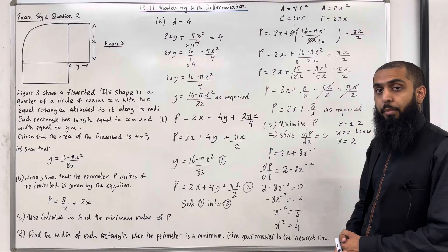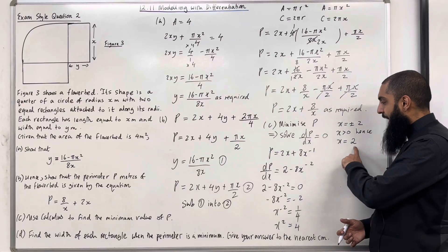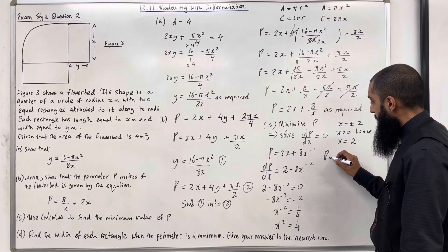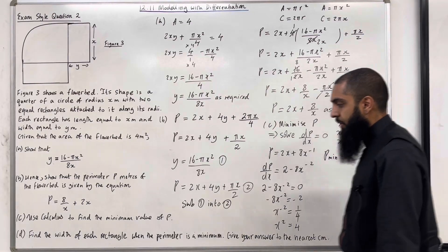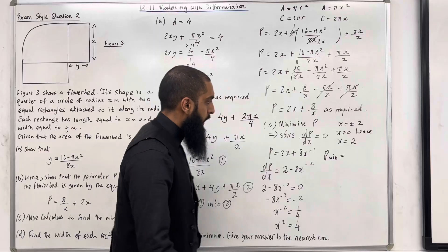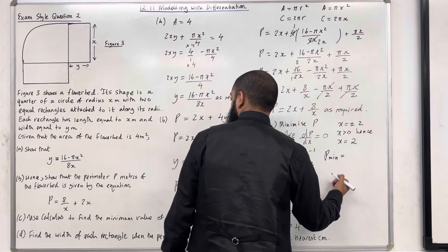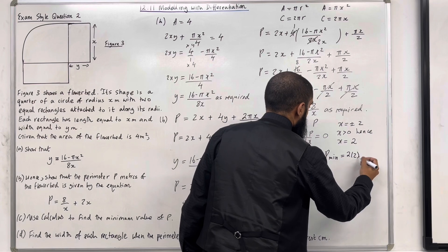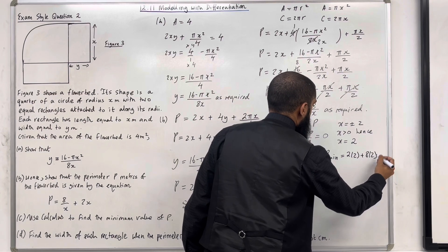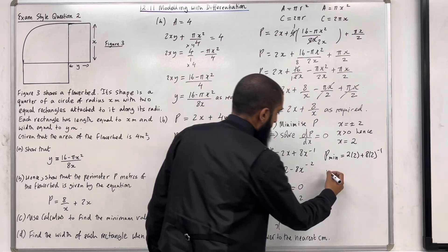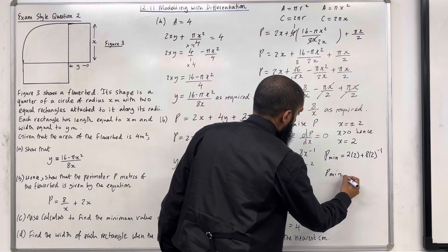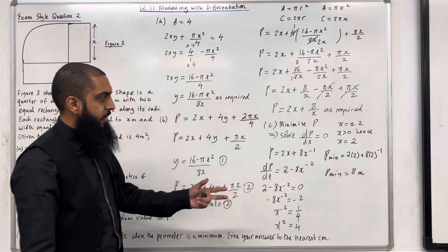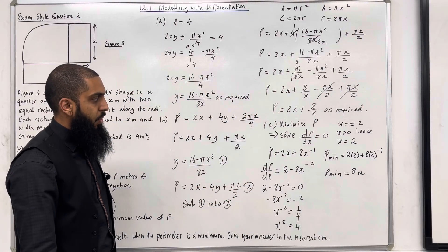To minimise the perimeter, we substitute x equals 2 into the perimeter formula. So P minimum equals 2 times 2 plus 8 times 2 to the power minus 1, which equals 8 metres. That completes Part C of the exam style question.